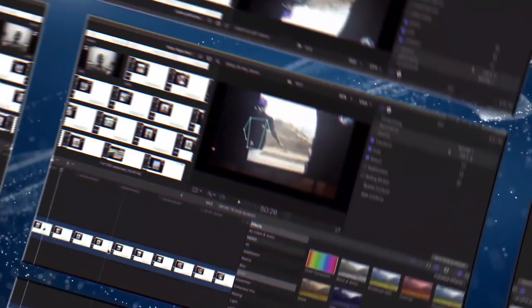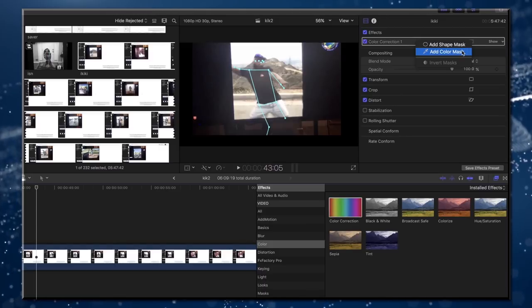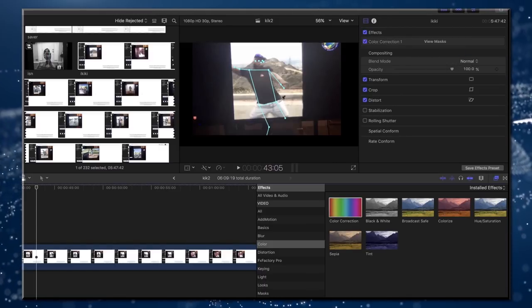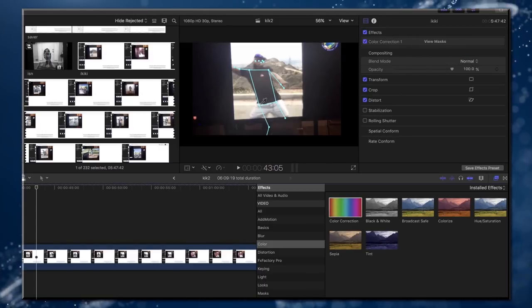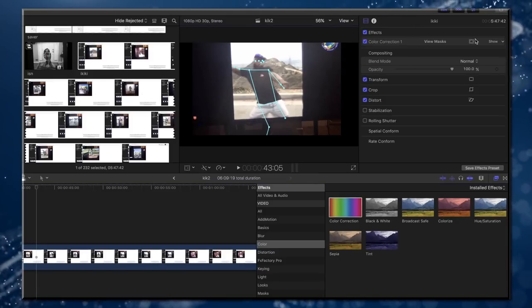Once I had the screen cast video, I cropped it so only the dance portion was visible, then applied a color mask to the video using Final Cut Pro.